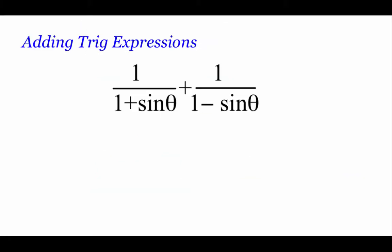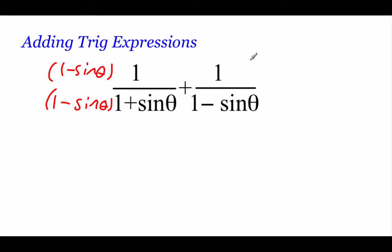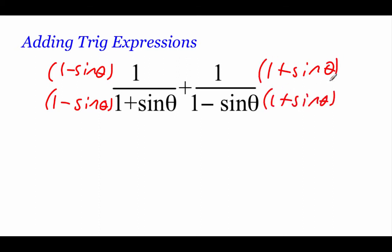Our next example is very similar — we're adding some fractional things together, so before we get started we're going to find common denominators. On the left-hand side, I'm going to multiply by 1 minus the sine of theta, which shows up as the denominator of the other fraction, and whatever we do to the bottom we also have to do to the top, so we'll multiply by 1 minus the sine of theta there. On the right-hand side, I'm going to multiply by 1 plus the sine of theta. Doing our multiplication on top: 1 times 1 is 1, negative sine of theta times 1 is negative sine of theta.